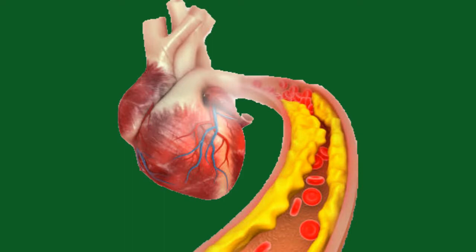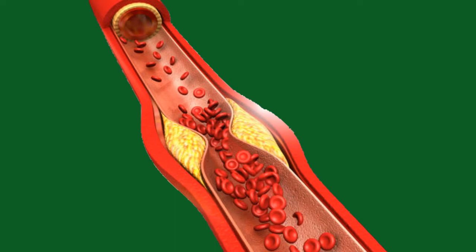Can diabetes cause hypertension? A person with diabetes either does not have enough insulin to process glucose, or their insulin does not work effectively. Insulin is the hormone that enables the body to process glucose from food and use it as energy. When a person has insulin problems, glucose cannot enter their cells to provide energy, so it accumulates in the bloodstream instead.